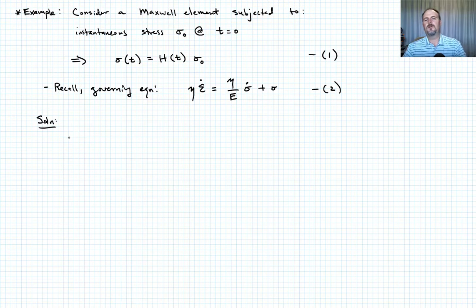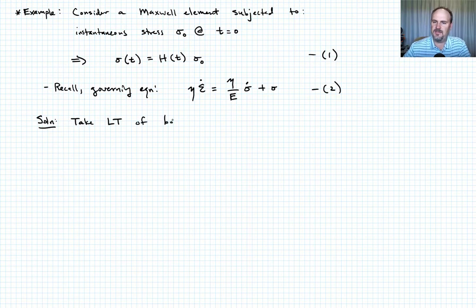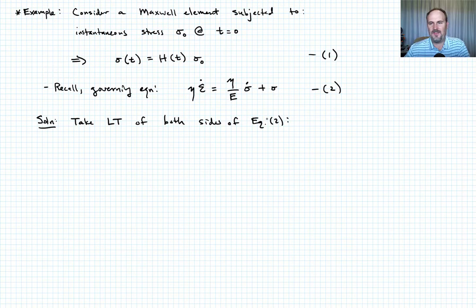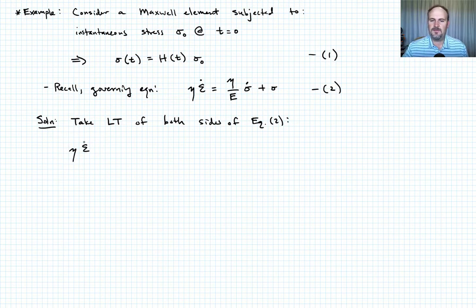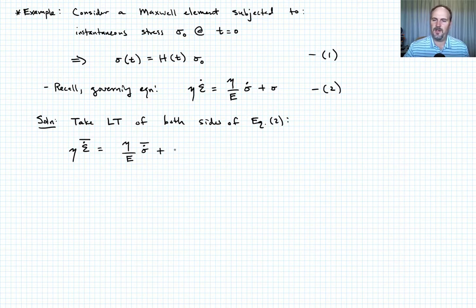We want to use the Laplace transform technique, so we take the Laplace transform of both sides of equation 2. Since the Laplace transform is an integral method, we can take the Laplace transform of each term separately. This gives us: eta times the Laplace transform of epsilon-dot equals (eta over E) times the Laplace transform of sigma-dot, plus the Laplace transform of sigma — that's sigma-bar. Call that equation 3.